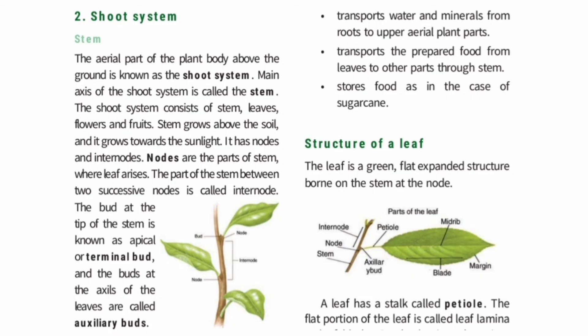The stem is located above the soil, so it is positively phototropic — 'photo' means light and 'tropic' means movement. The stem has nodes and internodes. Leaves are joined to the stem at the nodes.